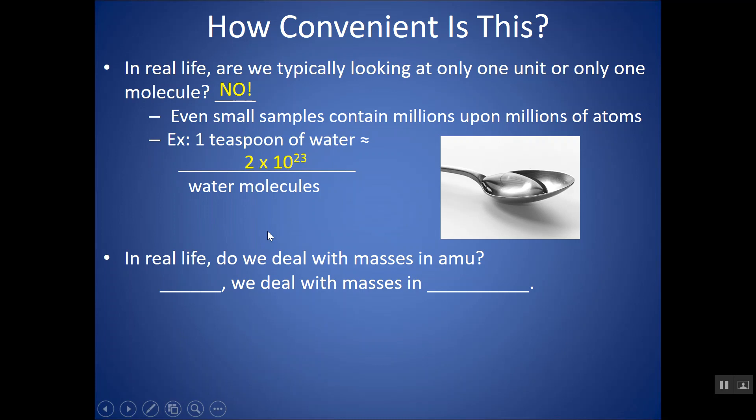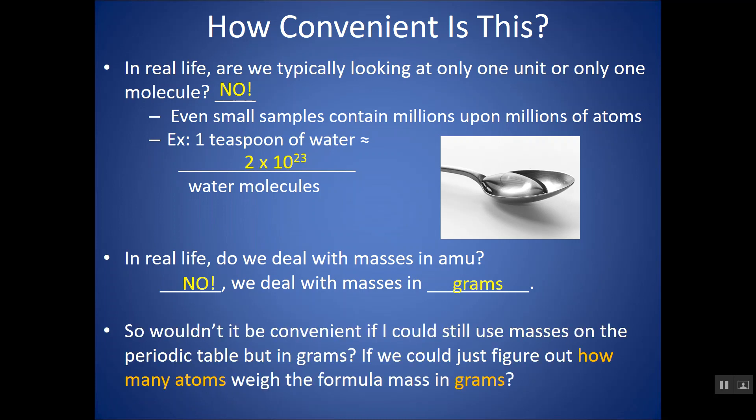In real life, do we deal with masses in AMU or atomic mass units? No. What do you measure out in the lab? You typically measure out things in grams. Wouldn't it be convenient, though, if I could still use the masses on the periodic table, but I can use them in grams instead? If we could just figure out how many atoms weigh the formula mass in grams, that would be a lot more convenient.